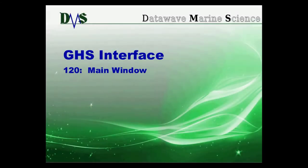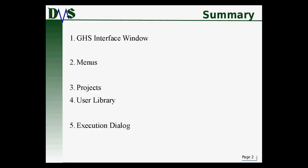Welcome to tutorial 120, on the GHS interface, focusing specifically on the main window. In this tutorial, we're going to start introducing the GHS window itself and what all the buttons mean. We'll cover the menus, introduce the concept of projects, go over the user library, and quickly introduce the execution dialog — all things you'll see pretty much immediately when you first start up GHS.